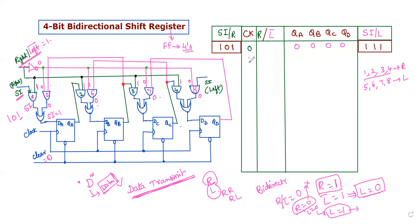Next, the clock pulse is applied. The R/L-bar control input selects the right-shifting operation. When the first clock pulse is applied, the first LSB bit is placed into the first flip-flop. We use 4 bits of data to load.